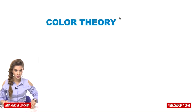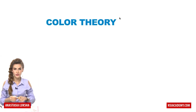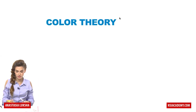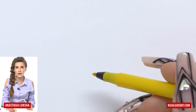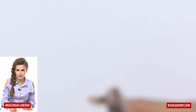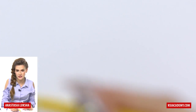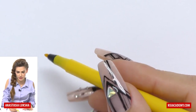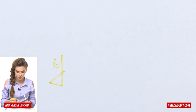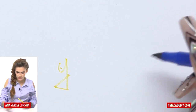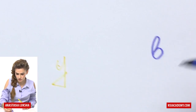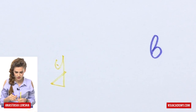Originally there were only three colors — colors that we cannot get from mixing, so-called primary colors. There's yellow, there's blue, and there's red.